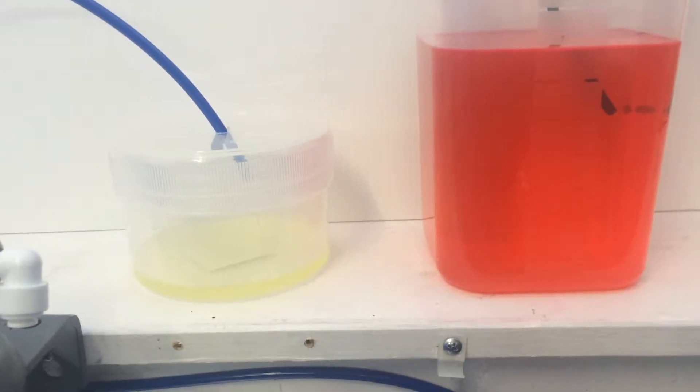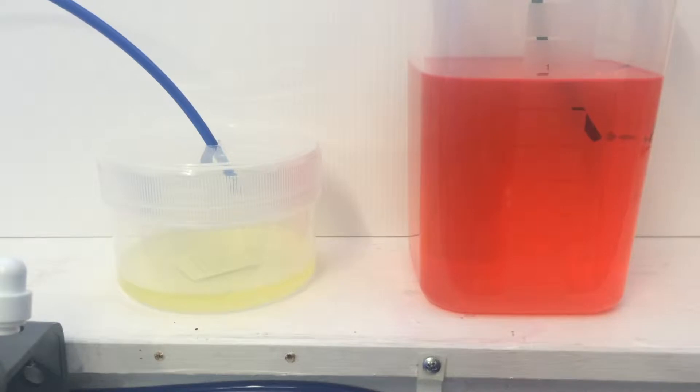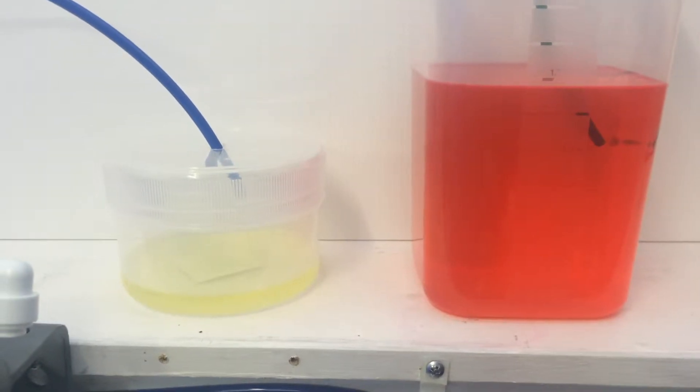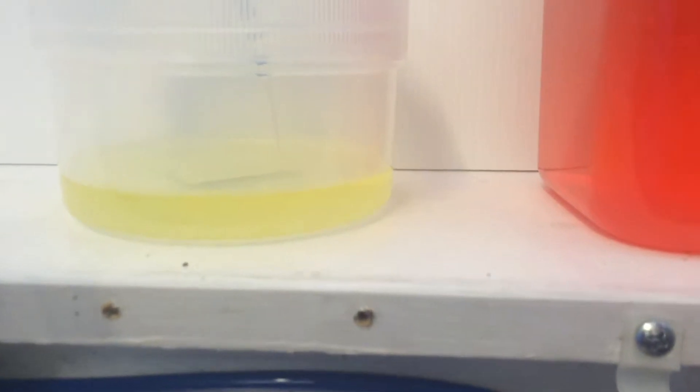We added red food coloring to tap water and pumped it through each of the filters. As you can see here, we are testing the 91240 filter first and notice it has reduced the color but not completely removed it. We give this a rating 7 out of 10.